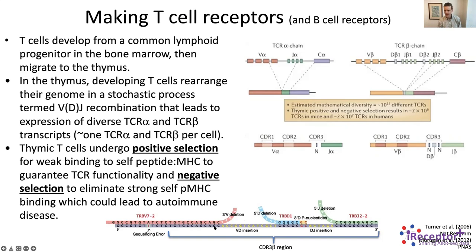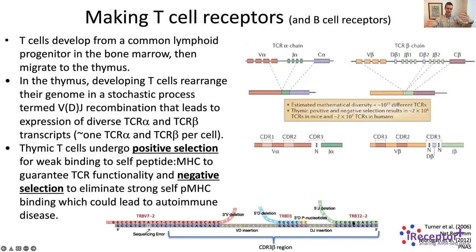This graphic from a very nice 2012 paper by Mora and Walczak shows how, starting from a sequencing read, you can infer which J gene and which V gene was likely used. In many cases it's hard to determine which D gene in the middle was used. You also have processes by which nucleotides are deleted off the ends of the genes, and then non-templated or random nucleotides are inserted in the middle.